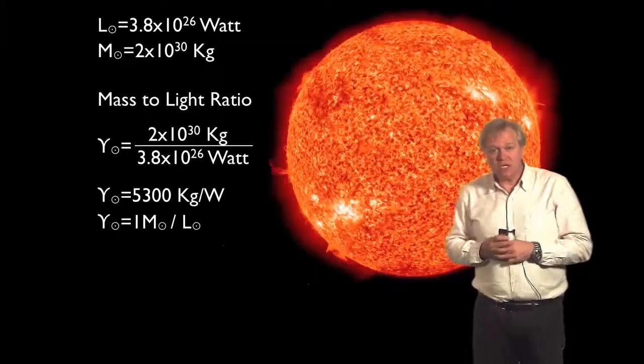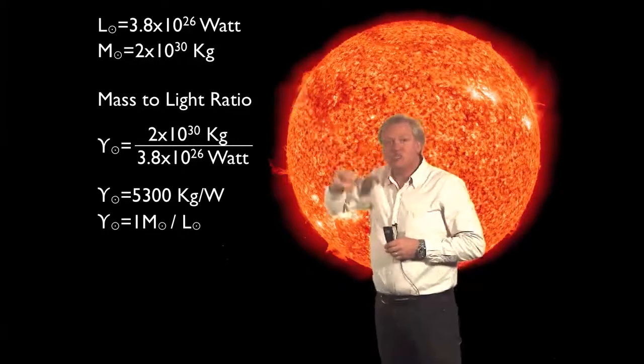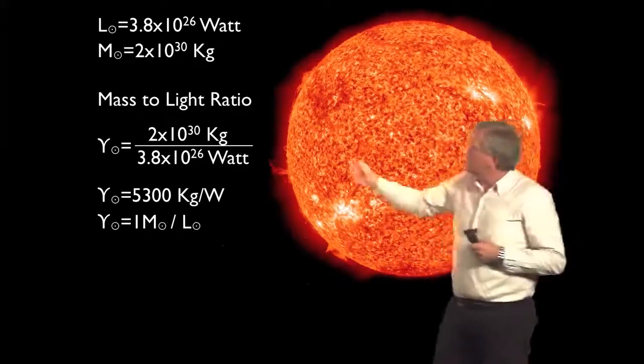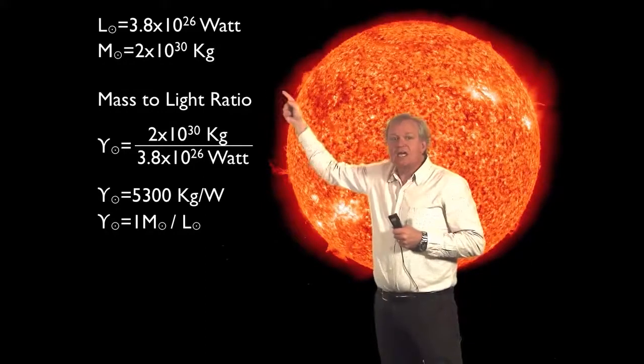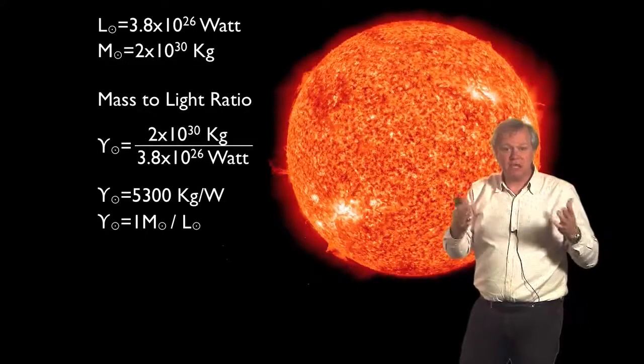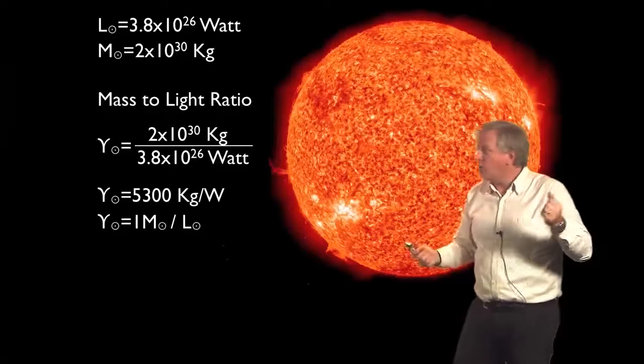So the sun has a brightness, 3.8 times 10 to the 26 watts, and a weight or a mass, 2 times 10 to the 30 kilograms. And so we can define something which we're going to call the mass to light ratio, which tells you how many kilograms gives you how many watts.